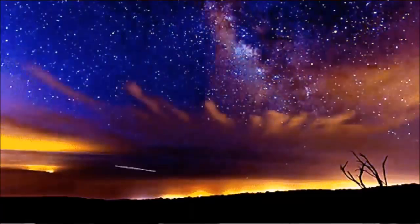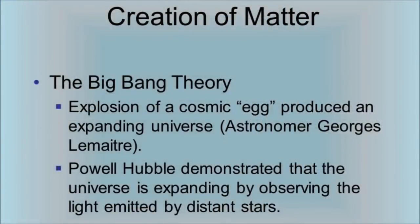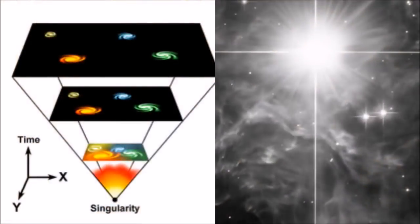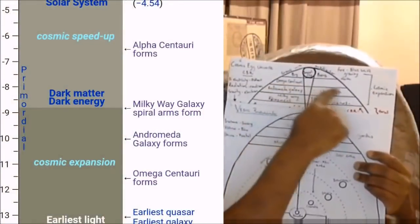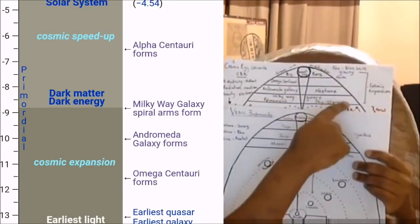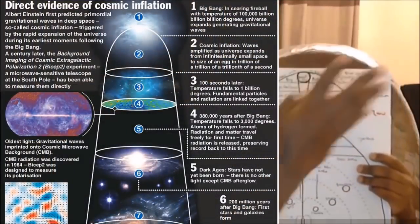We talked about the firmament, the heavens above. In mainstream science, they tell us that everything began with the big bang — the point of singularity — and everything spread out into the universe. The dark star, the god star, the Sirius star system is the first realm. The second realm is the Omega Centauri galaxy. Then we've got the Andromeda galaxy. And then we've got the Milky Way galaxy, which is just above the firmament. So those are the four heavenly realms.